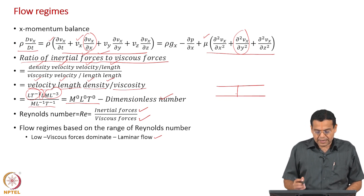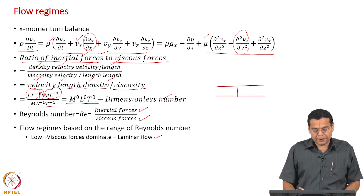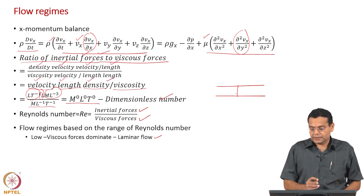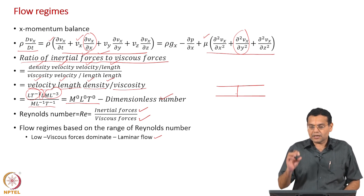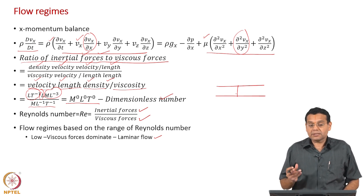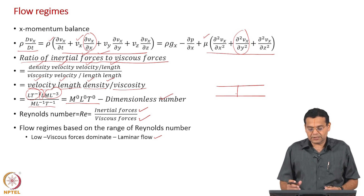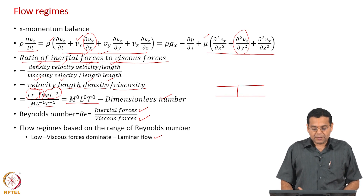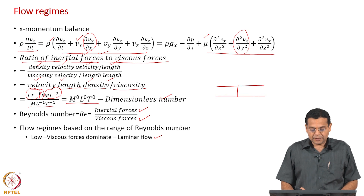So when can laminar flow happen? The velocity is low, the fluid flows through a channel of small dimension, density is low, and viscosity is high. For example, a very viscous oil flowing at low velocity results in laminar flow. In fact, flow through all microfluidic devices will be in the laminar flow regime.